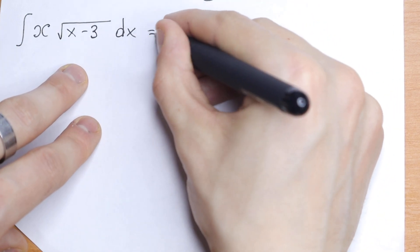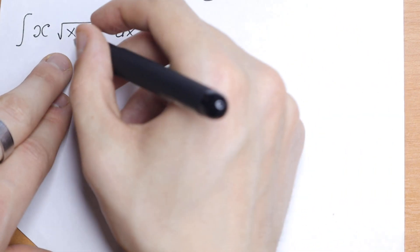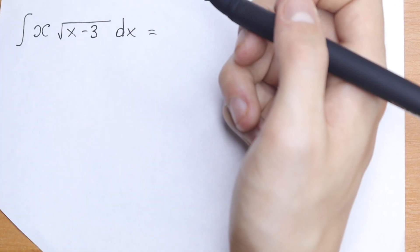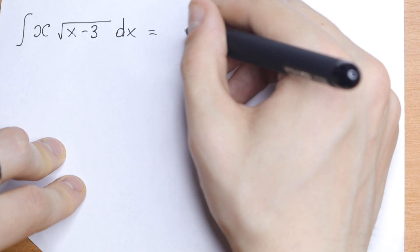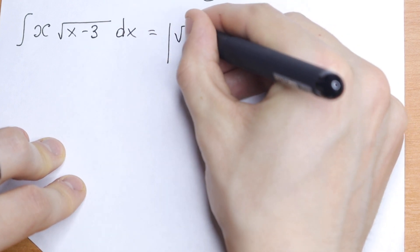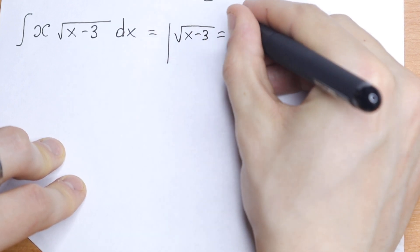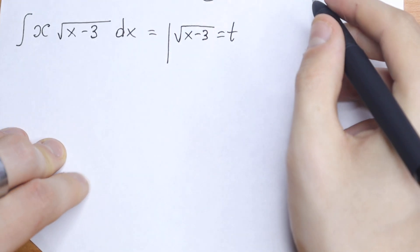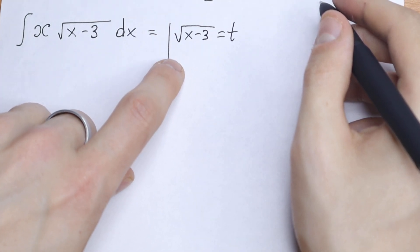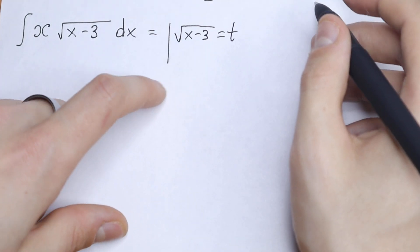I'm going to suggest a really good trick to solve it. Let the square root of x minus 3 equal t. From here, we'll find our x and later find our dx.